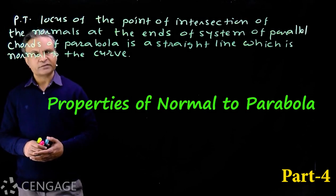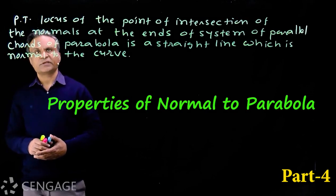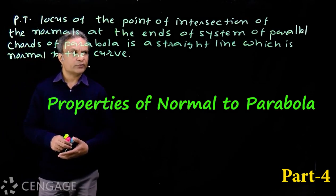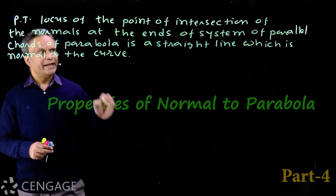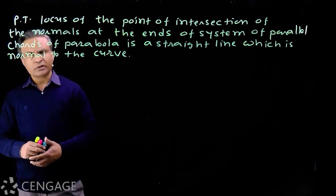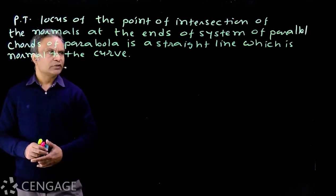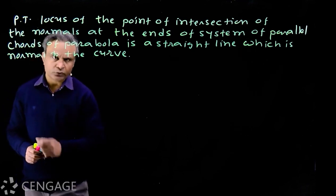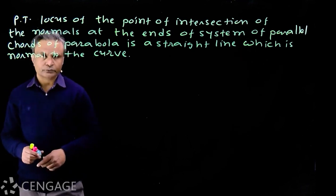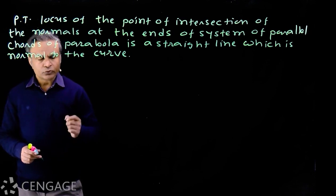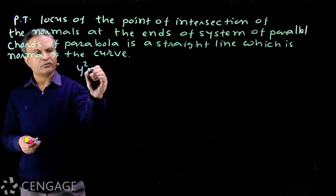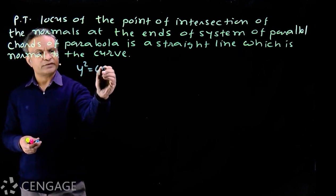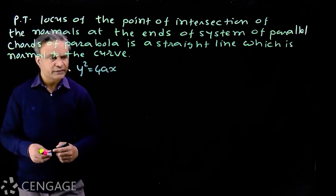Here we have one very interesting question. The question is: prove that the locus of the point of intersection of the normals at the ends of a system of parallel chords of a parabola is a straight line which is normal to the curve. To do this question, we consider the standard equation of parabola y² = 4ax.